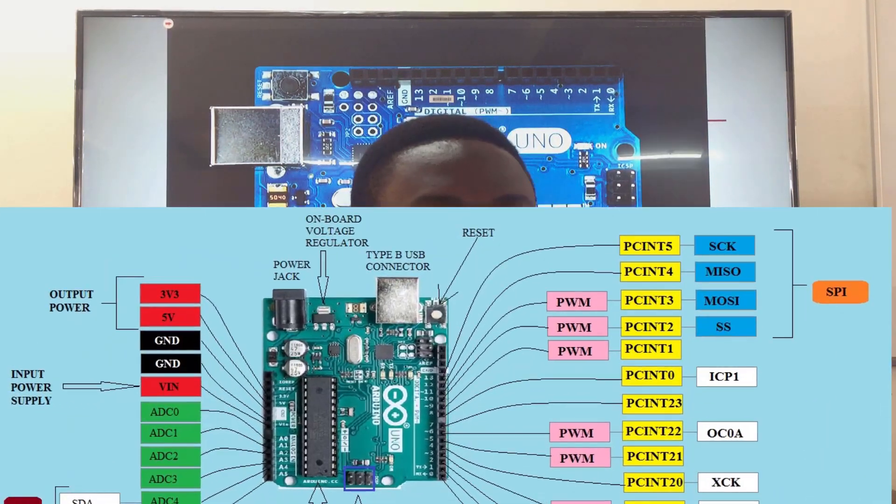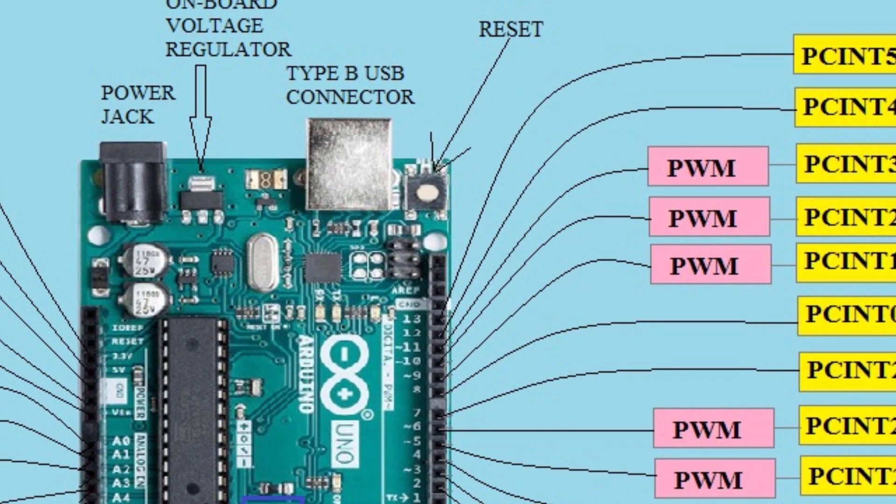Right beside the USB port, you can see a push button — this is the reset button. When your Arduino is not functioning as expected, you can press it to restart, and your program will run again, provided everything in the code is correct. On the power rail on the other side, there is also a reset pin, so you could build your own push button to trigger it.